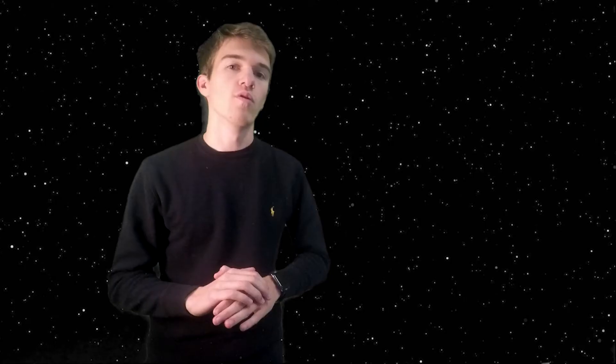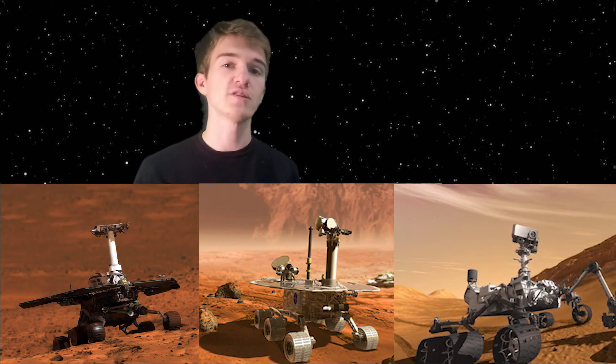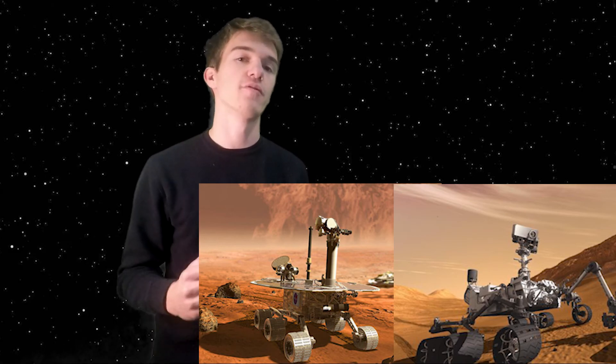Since these rovers are getting more and more advanced, I'm going to take a couple other episodes to explain the Spirit, Opportunity, and Curiosity rovers. But for now, that takes us all the way up to modern day Mars and what's going on on the surface of Mars, as well as what the history of Mars looked like, and how the naming convention happened. Thank you for watching, and tune in next time to learn more about the Spirit and Opportunity rovers.